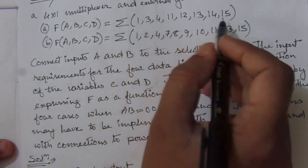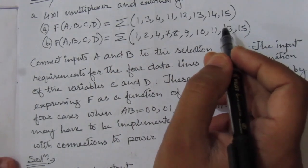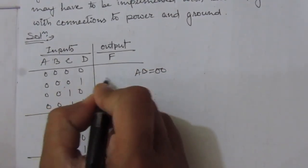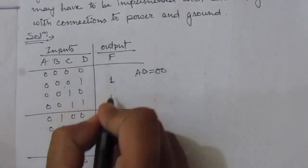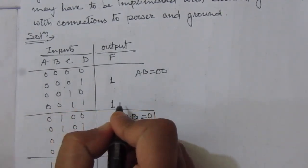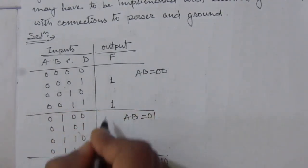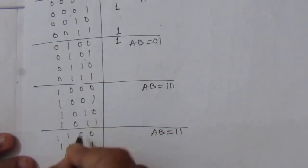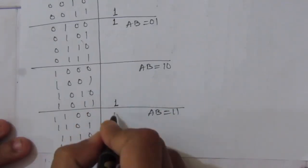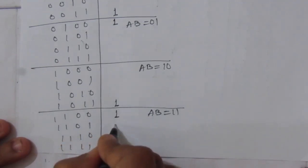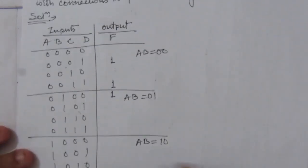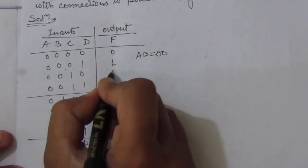Since this is a sum of minterms expression, if any one of these minterms has a value, the output will be 1. So let us write down the output function values. The minterms present are 1, 3, 4, 11, 12, 13, 14, and 15. So those positions will be 1.